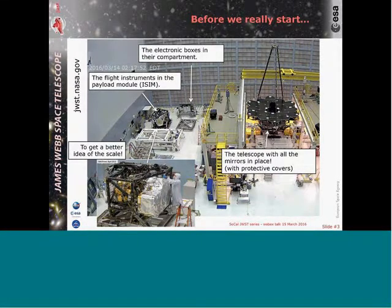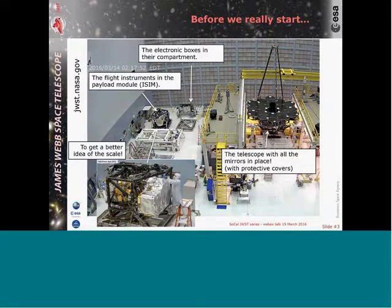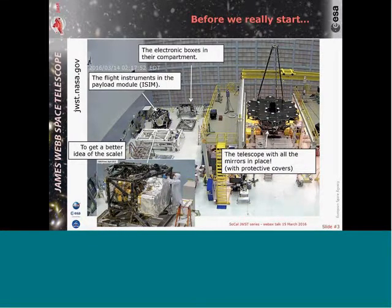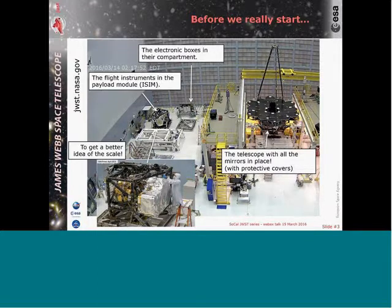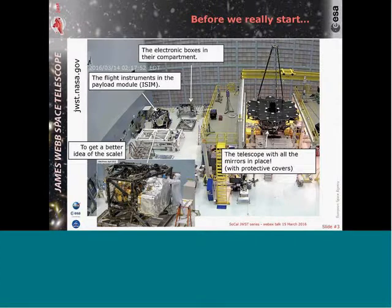I'm biased because I really like this project. You can see NIRSpec integrated. On the right, with all the primary segments and the tertiary — the telescope itself — and on the right side, the little black structure. I've put an earlier picture from 2015 to show the scale. This is the payload module ISIM with four instruments, and you have electronic boxes in the back. These are very interesting times because we see things coming together.